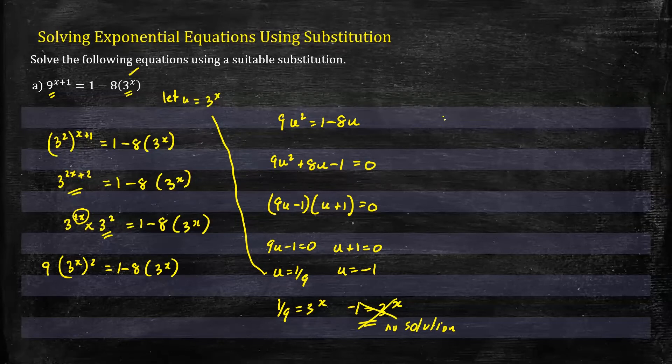On the left side we had 3^x equals 1/9. So we want to make these base 3. So 3^x would be equal to 1 over 3 squared, which gives us 3^x equals 3 to the power negative 2. Therefore, x would be equal to negative 2.